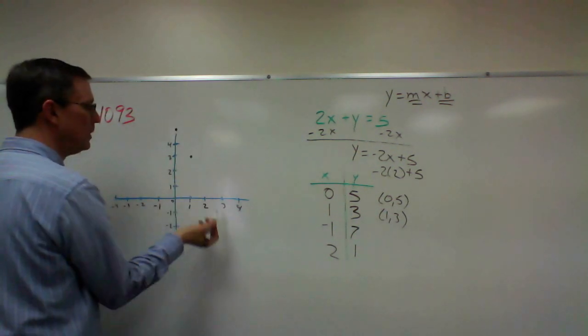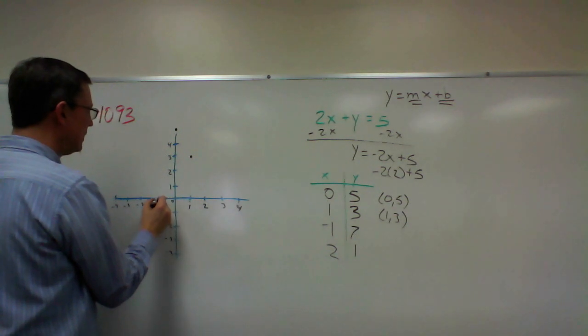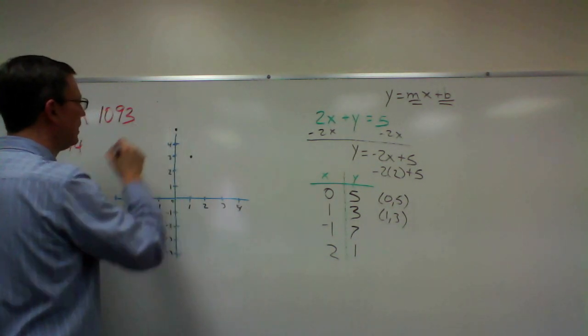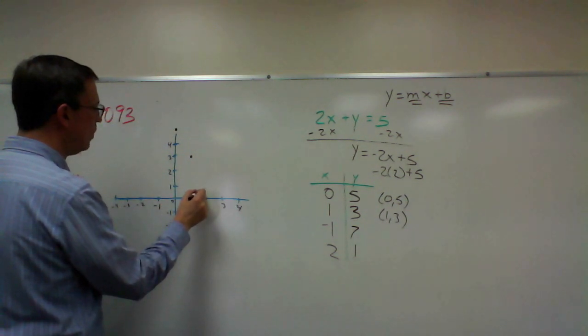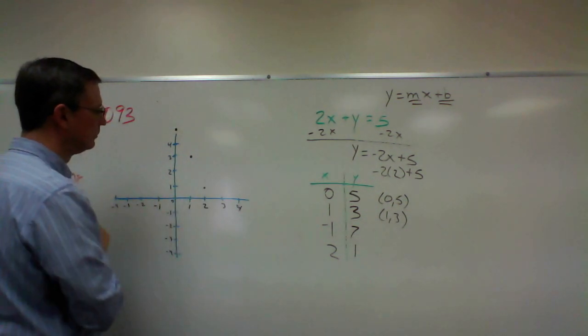1, 3 would be here. Negative 1, 7 would be way up here somewhere. And then 2, 1 would be right here.